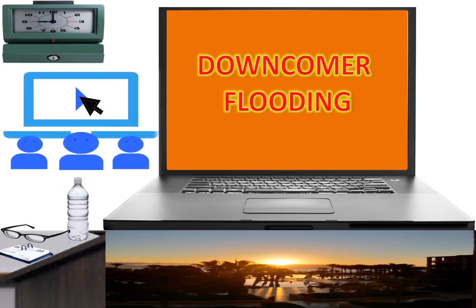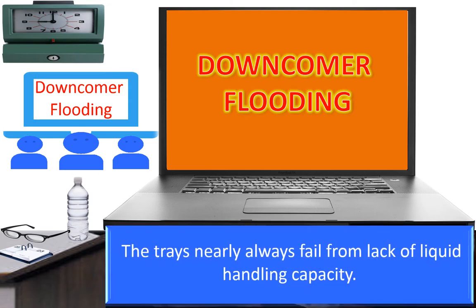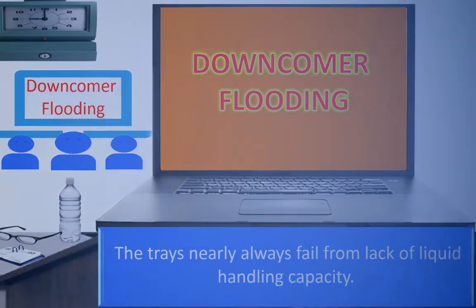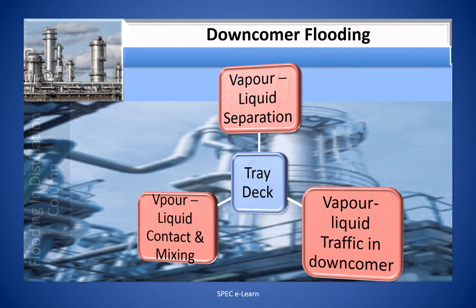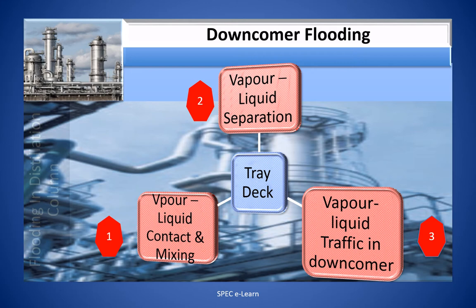Downcomer flooding. Trays nearly always fail from lack of liquid handling capacity. The tray deck has three functions: vapor-liquid contact, vapor-liquid separation, and to permit the froth to flow over the weir to the downcomer. Having discussed jet flooding in parts one and two, we now focus on the downcomer, which is an important element connecting one tray to another to facilitate liquid movement. The froth structure and hydraulics in the downcomer need thoughtful analysis to appreciate their importance in stable column operation.